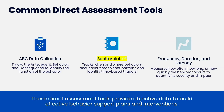We use a couple of things to do this. One is ABC data collection — antecedent, behavior, consequence — and I'll explain that thoroughly. Scatter plots are also something you might do during the direct assessment process, to identify when and where behaviors occur over time, spot patterns, and identify triggers.